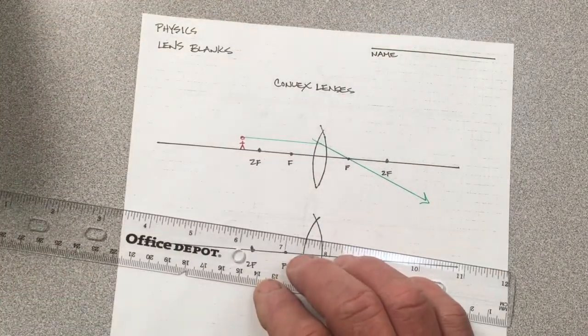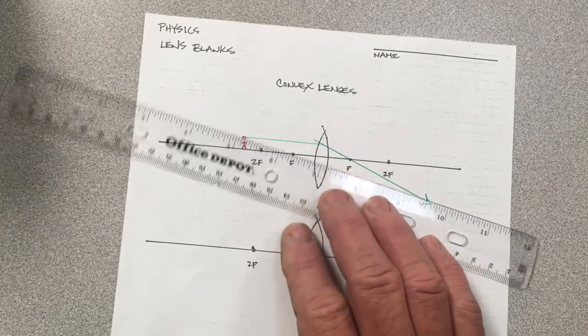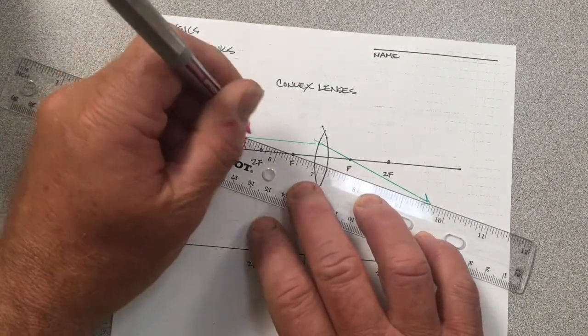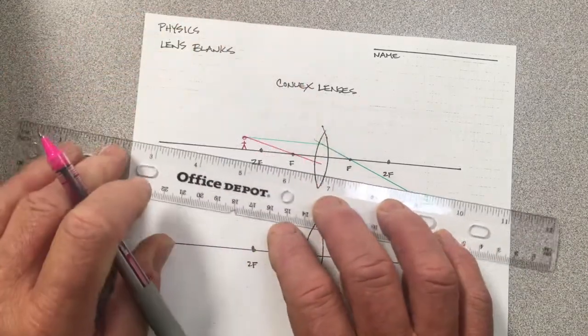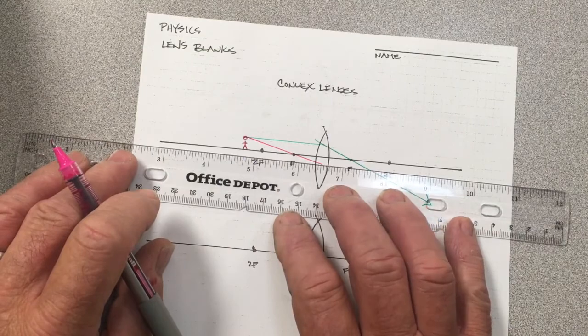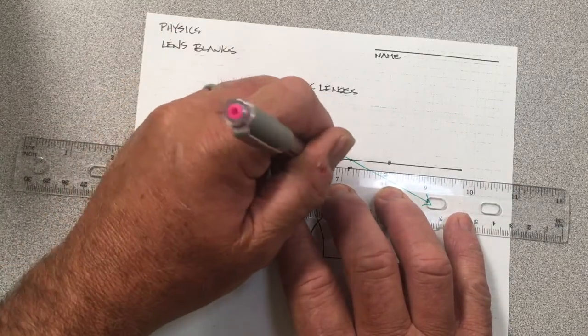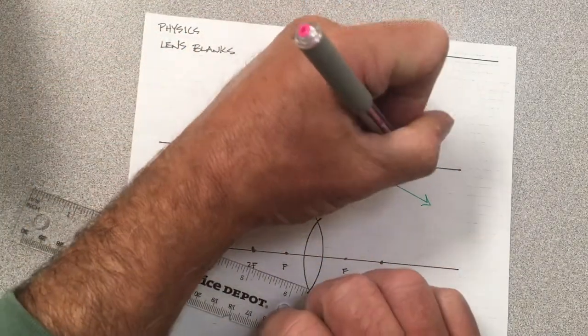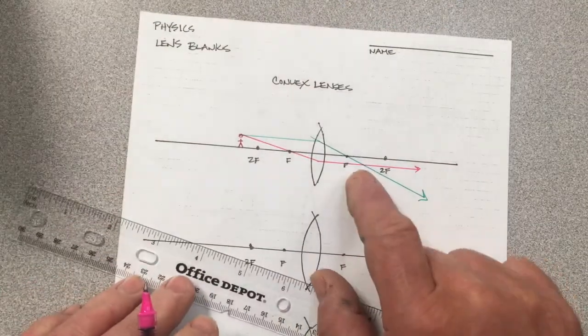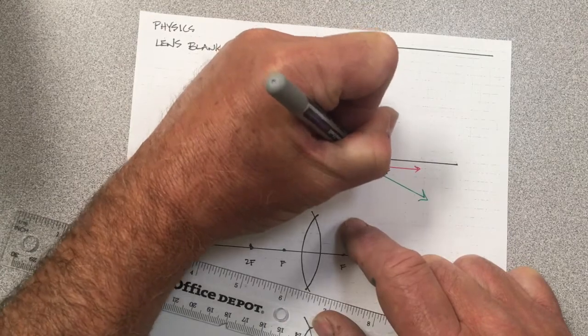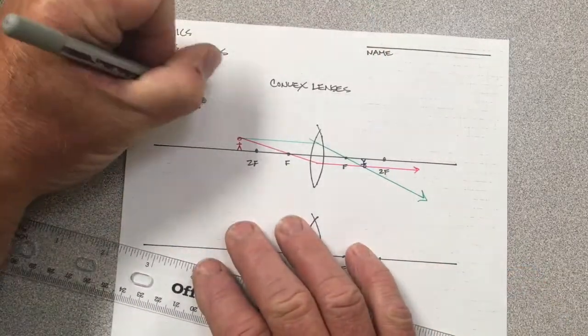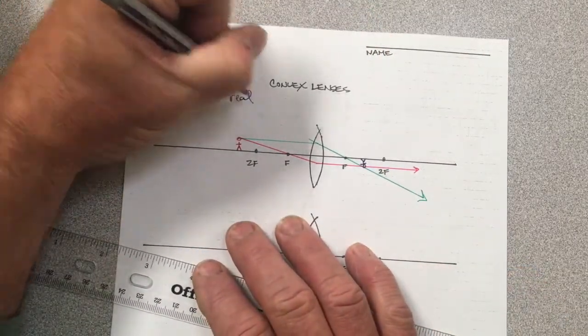The second ray, again, I like to draw through F and when it reaches the lens and begins converging, it will travel parallel to the principal axis after leaving the lens. The intersection of these two rays is where the image is formed. This image, again, is real.